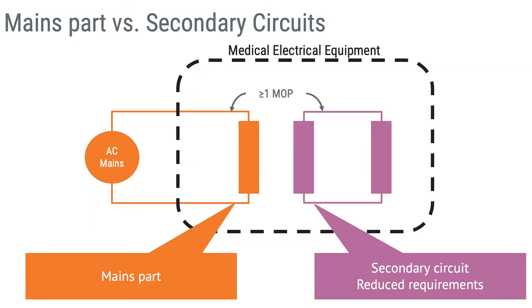A secondary circuit is separated from the mains part by at least one means of protection and is subject to reduced requirements. A secondary circuit can also be supplied from a battery.